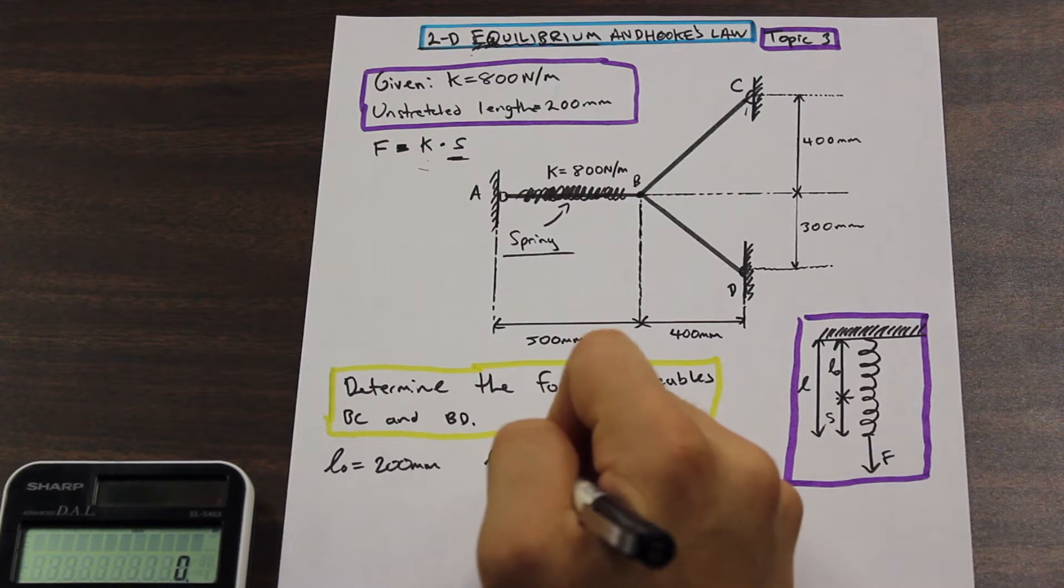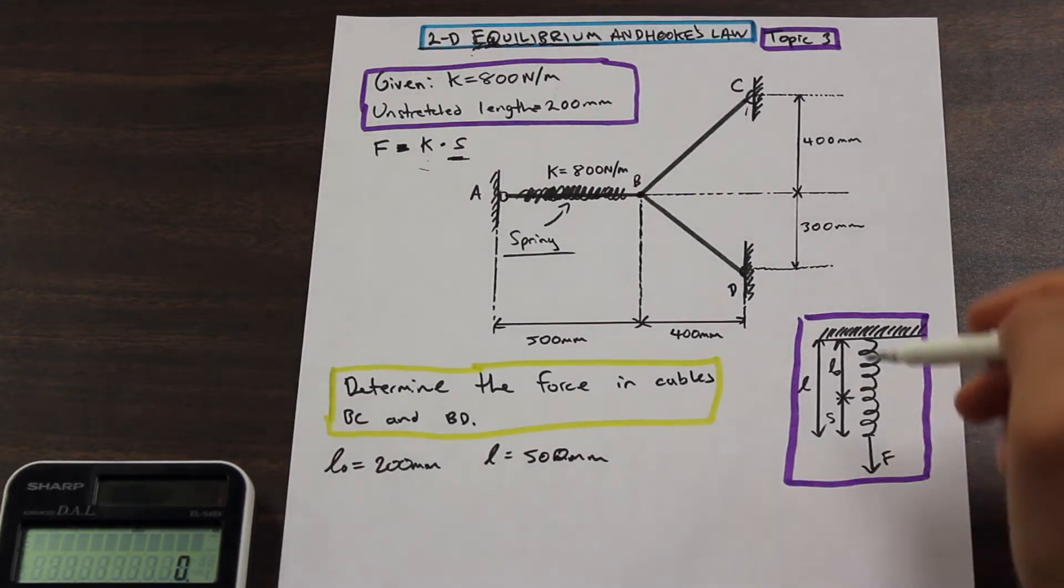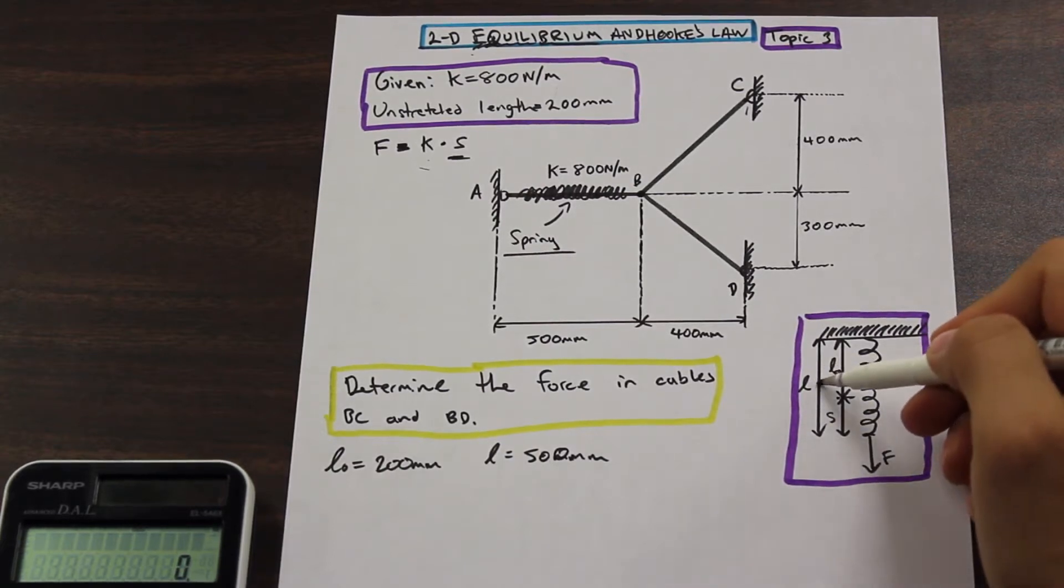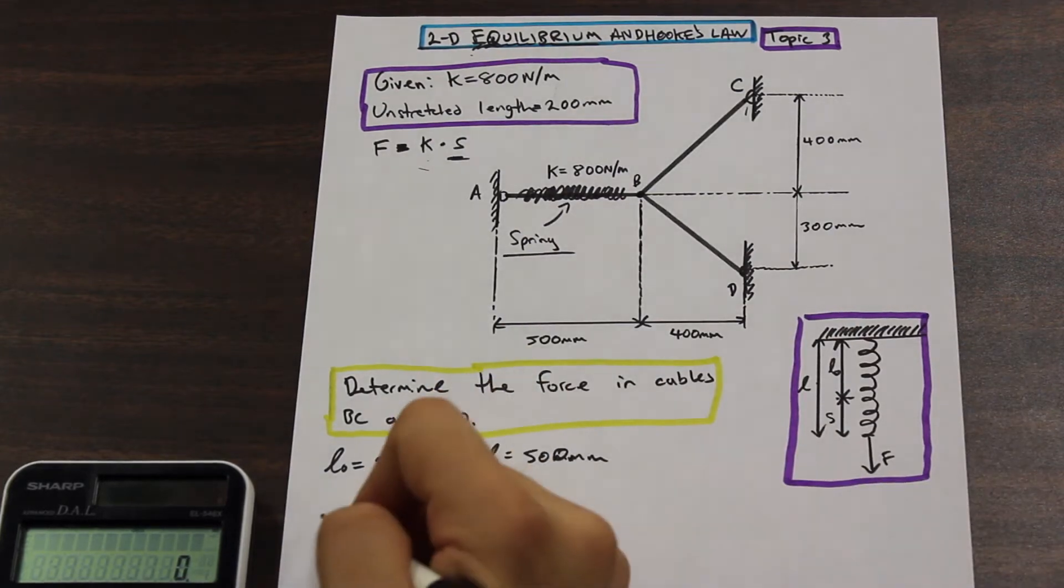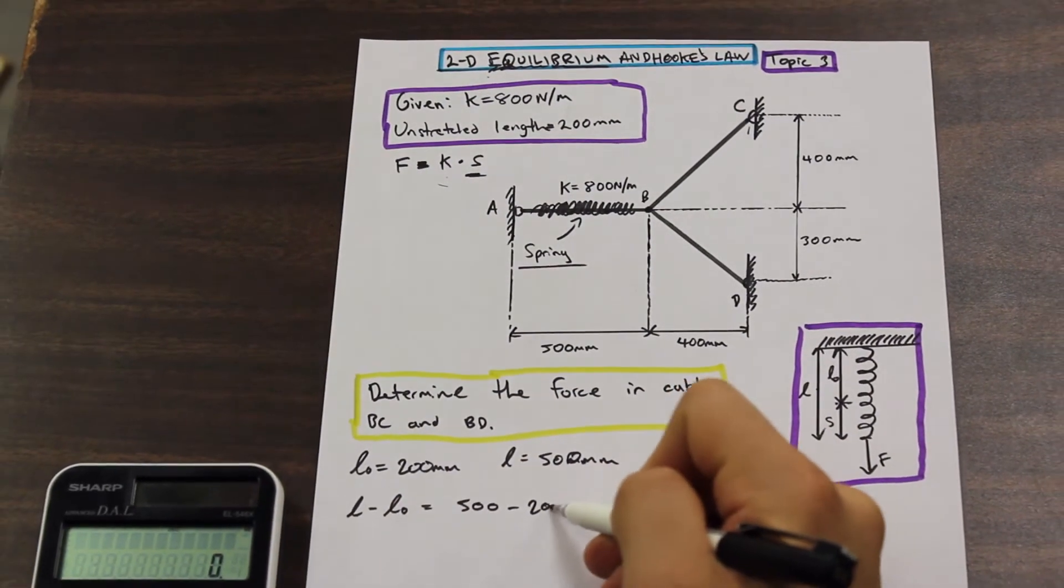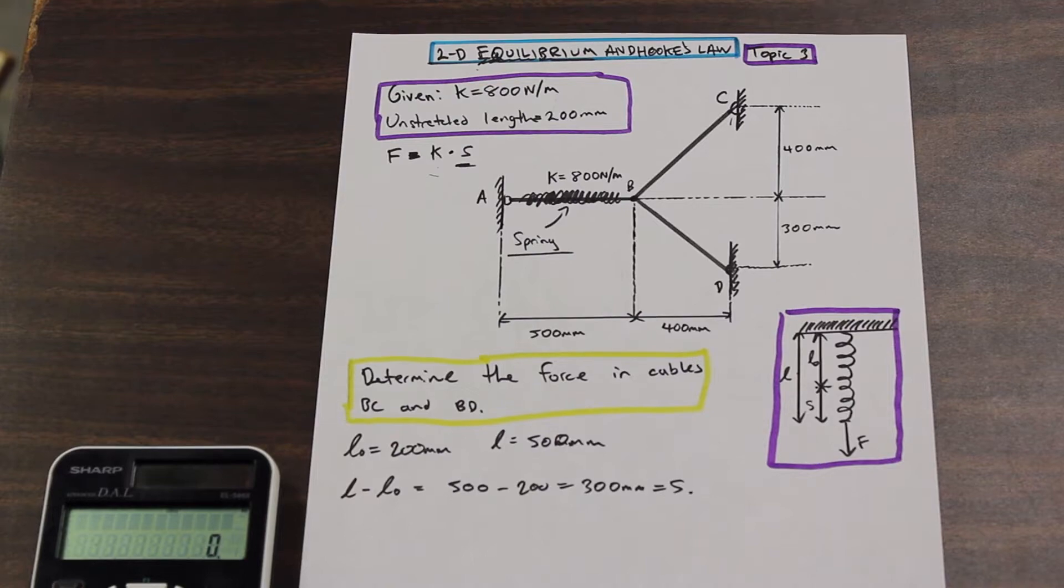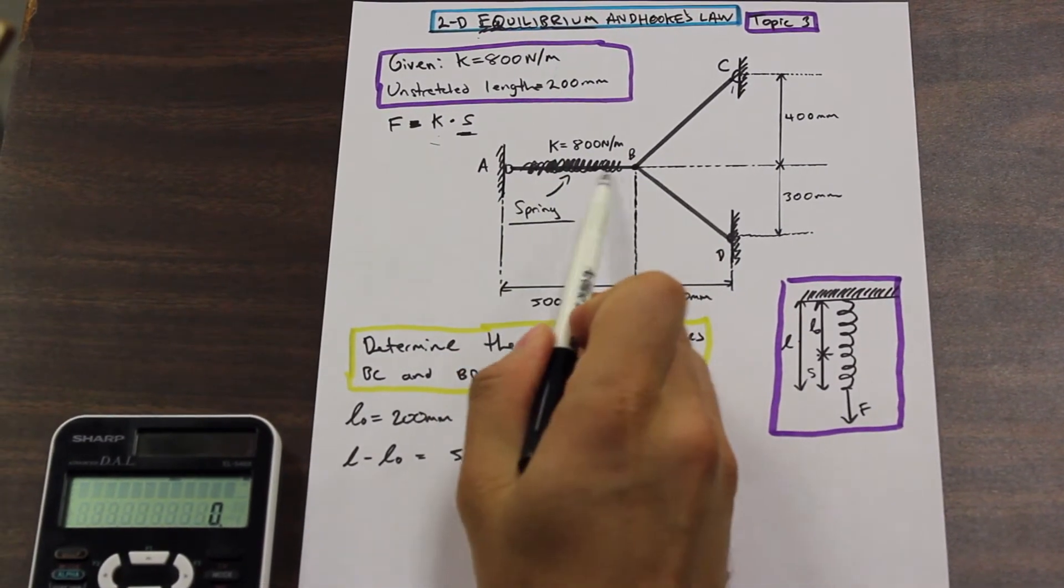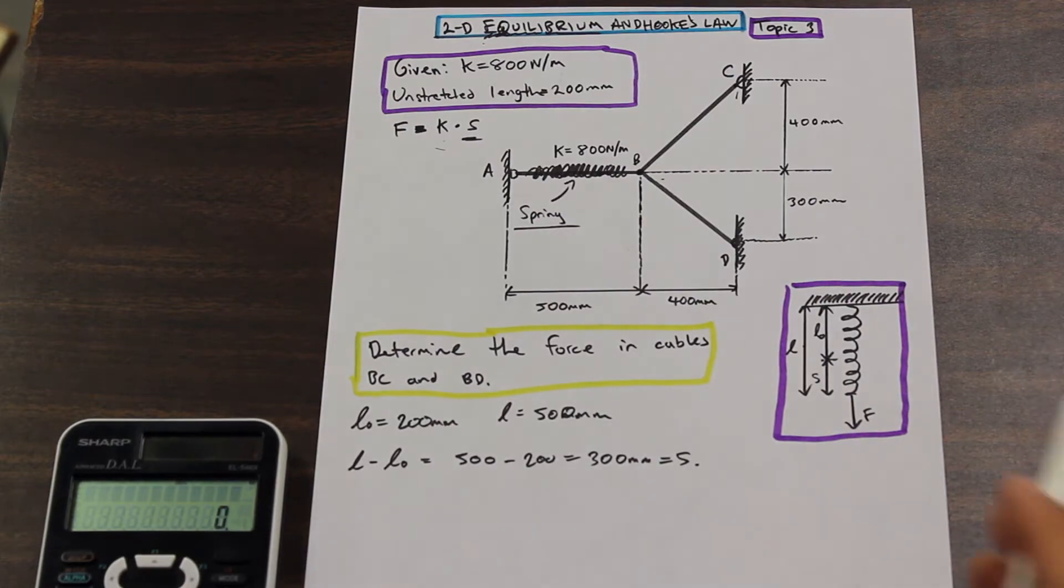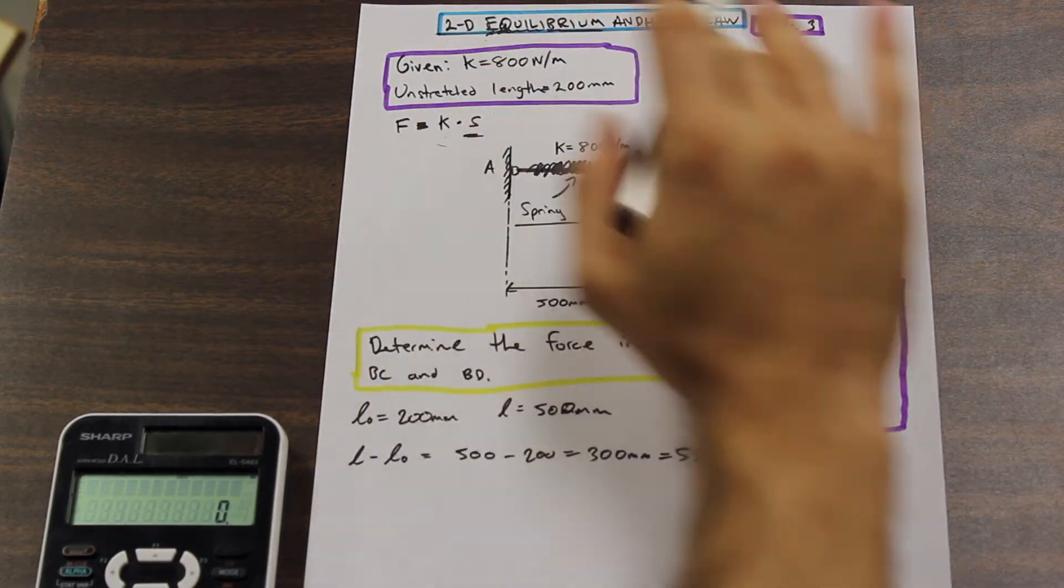All right so now if we have L and we subtract L naught. If we just draw this diagram and it helps you that's great, because if we just take L and we subtract L naught we're left with s. So if we take L and we subtract L naught we will have 500 millimeters minus 200 and that will give us 300 millimeters which will be equal to s. All right so that's kind of the theme in these questions, you're going to need to find the force in AB using Hooke's law. That's generally how these springs will factor into these types of problems. You're going to need to use the information given in the spring, use Hooke's law to find the force. Once you have the force then we're going to write equilibrium equations.